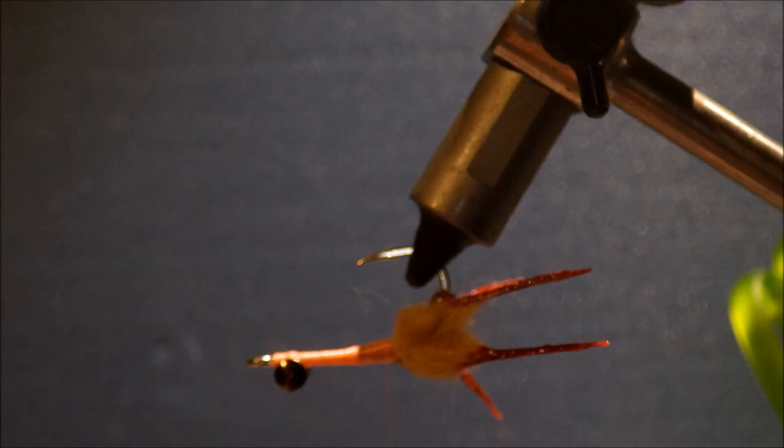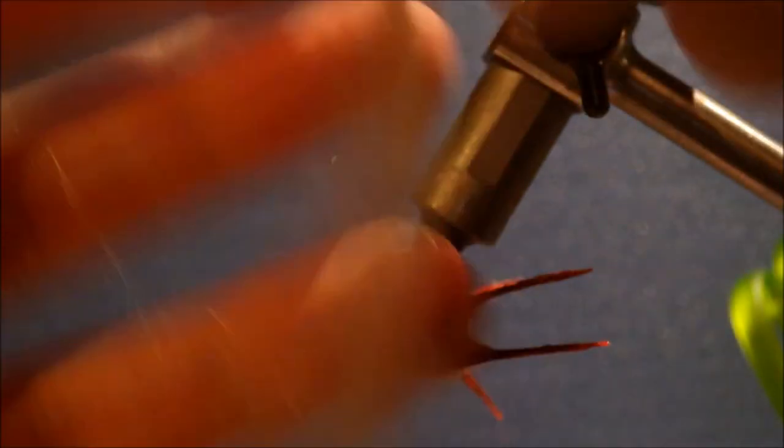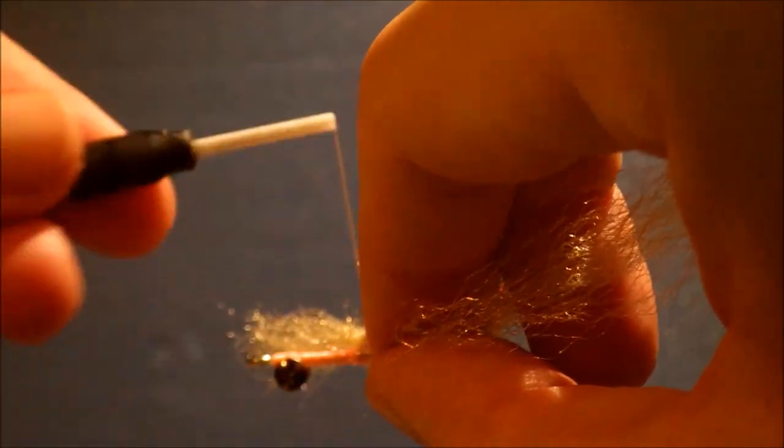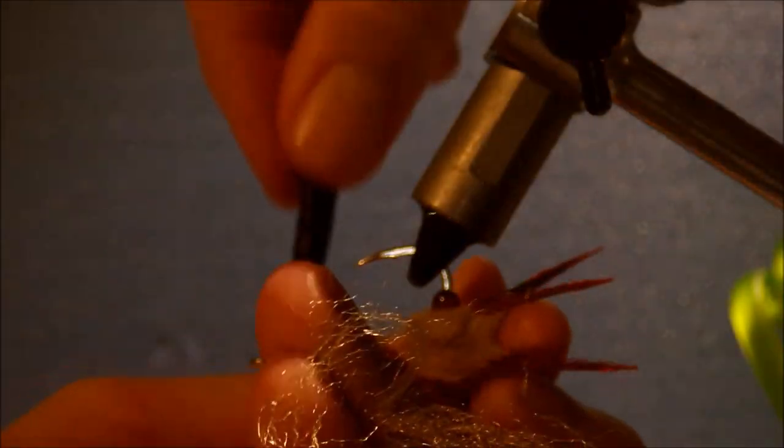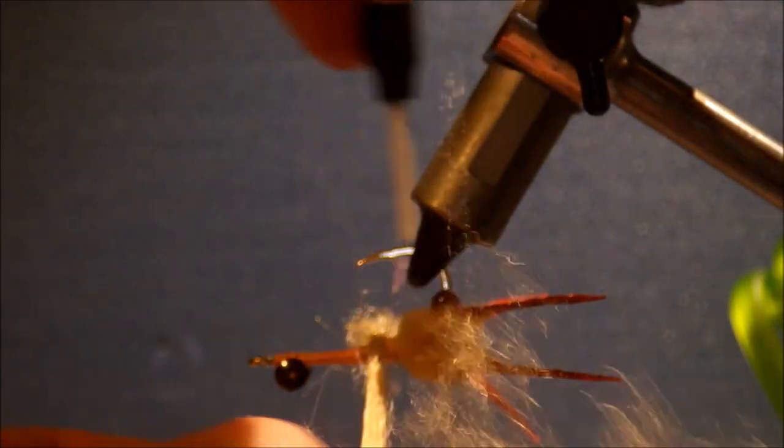So for the body I'm using EP fiber, but you could use sparkle yarn, you know Lydia's carpet, and then brush it out just as easily. It's actually possibly easier to tie if you use the sparkle yarn because you don't need to worry about the fibers tangling up.